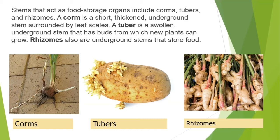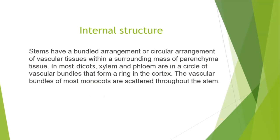Stems that act as food storage organs include corms, tubers, and rhizomes. A corm is a short, thickened underground stem surrounded by leaf scales. A tuber is a swollen underground stem that has buds from which new plants can grow. Rhizomes are also underground stems that store food. Stems have a circular arrangement of vascular tissue within a surrounding mass of parenchyma tissue.